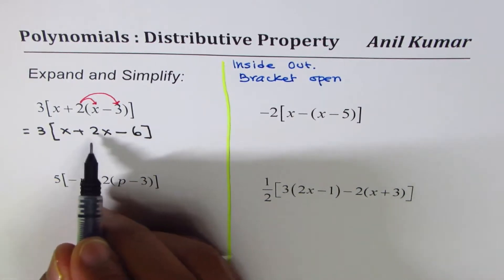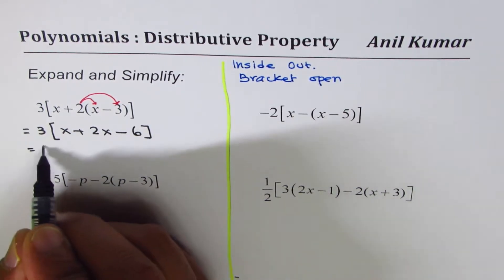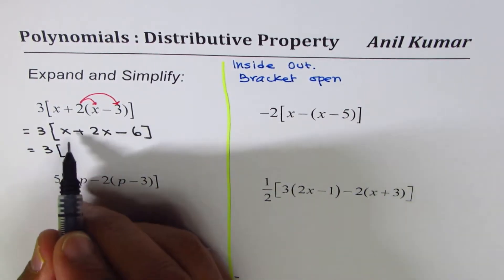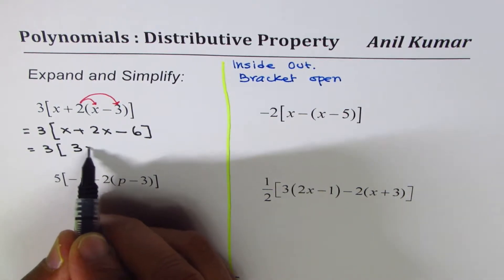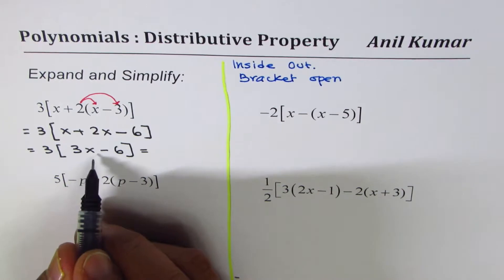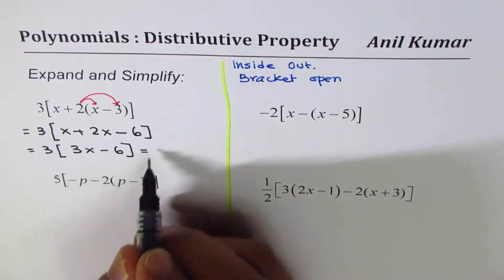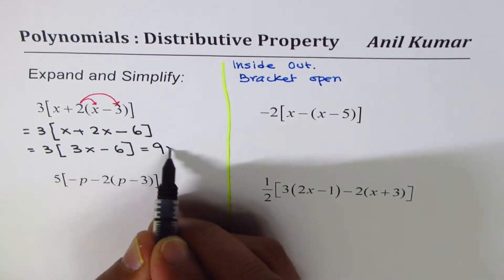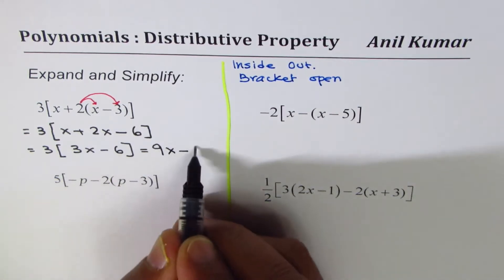Now you can combine the like terms. We have 3 times within bracket x plus 2x is 3x minus 6. Now you can open the bracket: 3 times 3x is 9x minus 18. Do you see that? So that becomes a simplified expression.